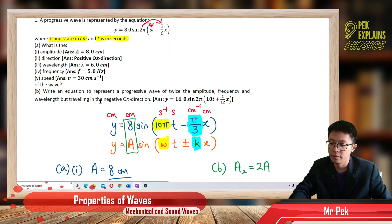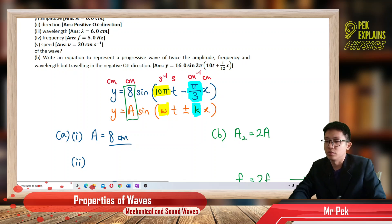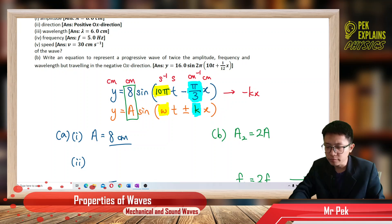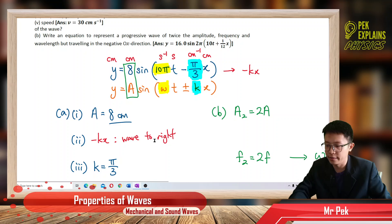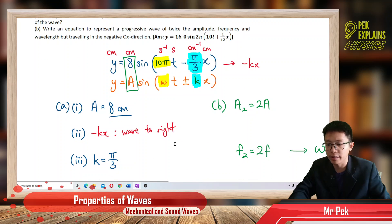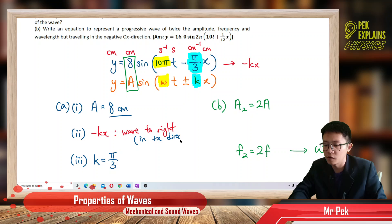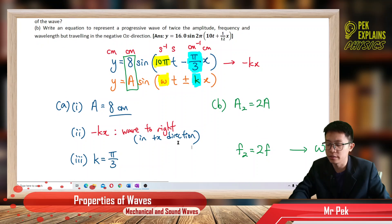Now, what is the direction of the wave? We look at the sign in the equation. The sign is negative kx. Negative kx means the wave moves to the right — in the positive x direction. So the answer is: the wave travels in the positive x direction, which is the same as to the right.